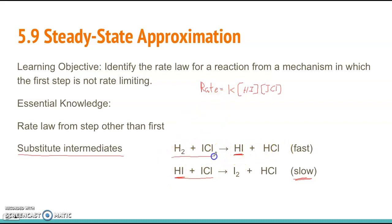And we're going to substitute in the reactants from the step that produced the intermediate into the rate law equation. So it's going to be the concentration of H2 and the concentration of ICL. Now we'll substitute those in for the concentration of HI. So when we substitute that in and rewrite the rate law equation, it's going to be rate equals K.